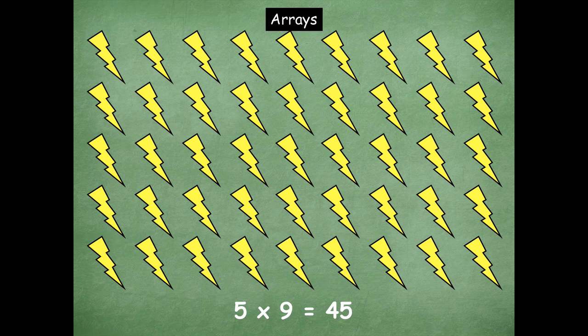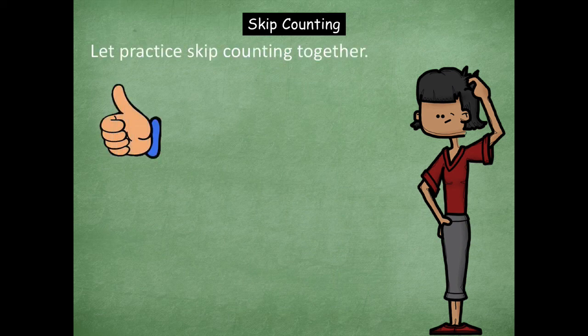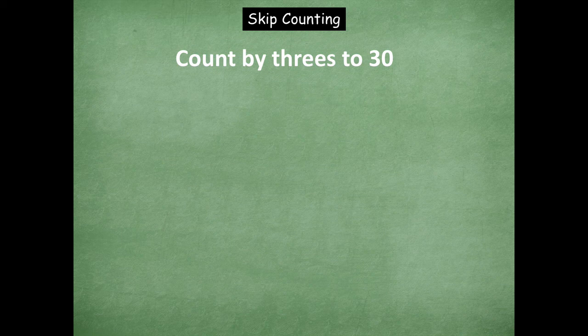So great job using arrays friends. Now we're gonna do some skip counting. Remember, counting up is thumbs up, a fist is stop, and counting down is thumbs down. We're gonna start with threes. Remember, every time you skip count a number you are going to put up one finger. So if we're doing three, six, nine, you should have three fingers up — that means three times three is nine. Okay, here we go.